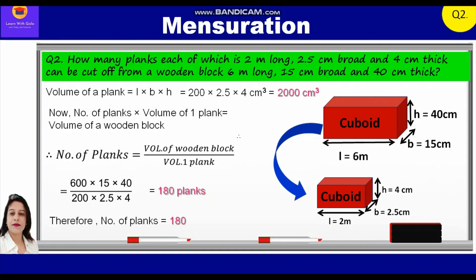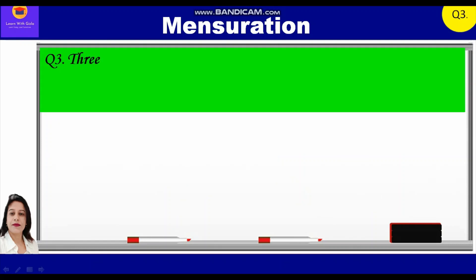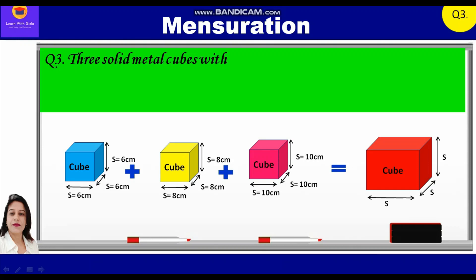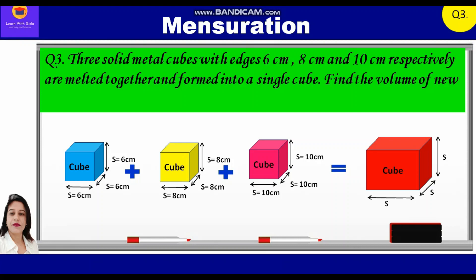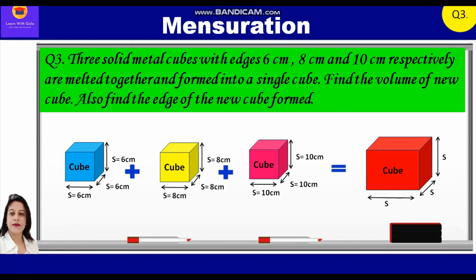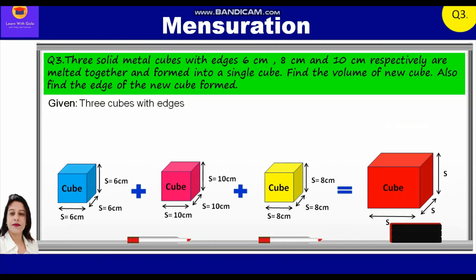Now let's take up the third question. Three solid metal cubes with edges 6 centimeter, 8 centimeter, and 10 centimeter respectively are melted together and formed into a single cube. Find the volume of the new cube and also find the edge of the new cube formed. Given: 3 cubes with edges 6 centimeter, 8 centimeter, 10 centimeter respectively, melted and formed into a single cube. To find: volume of the new cube, and edge of the new cube.